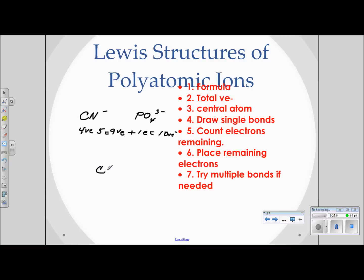Drawing the initial C–N structure with a single bond places two electrons, leaving eight to be placed. After placing all eight electrons, we check octets: each atom has only six electrons — two, four, six. No octet on either atom. We have a problem, indicating this will require multiple bonds.